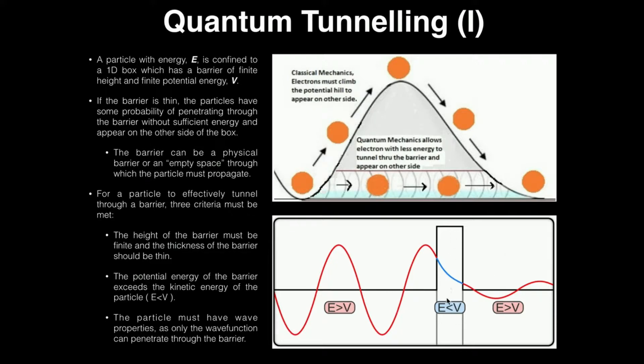So in other words, let's just say the potential energy was arbitrarily a number, a thousand. The kinetic energy on either side would have to be less than a thousand. In other words, the amount of kinetic energy has to be less than the amount of potential energy of the barrier.